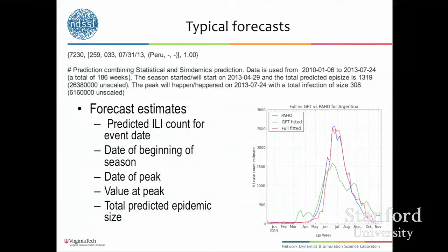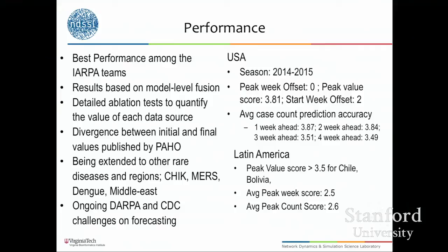The forecasting goes on every week completely automated — no human in the loop. You can train the models but the forecasts must be fully automated so that event triggers get processed. We've done ablation tests which tell you how good each data source is. Compared with Google Flu Trends, our models do quite well. We can forecast the count, the date of beginning of the season, when it would end, the time of peak, and the value at peak. The scoring is GPS-style — you get a score of four if you do very well. Our team has done very well in the first two years and has gone forward for the third year.